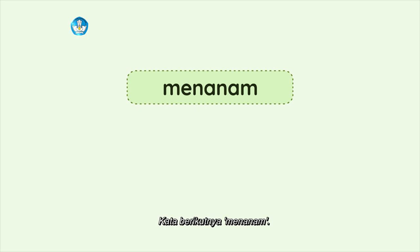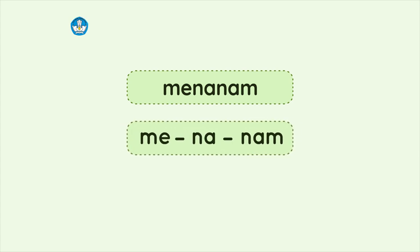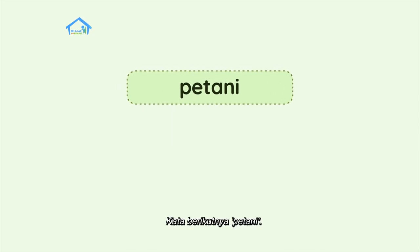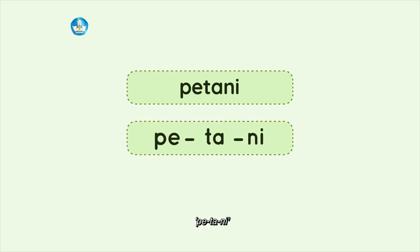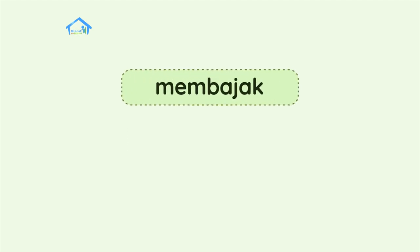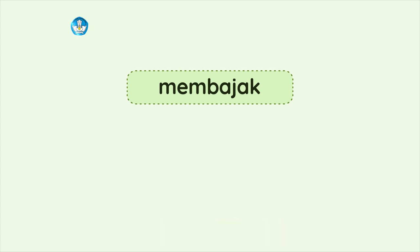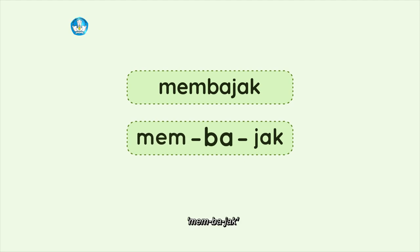Kata berikutnya, menanam. Apakah menanam mempunyai dua suku kata? Me-na-nam. Ada tiga suku kata, bukan dua. Kata berikutnya, petani. Apakah petani memiliki dua suku kata? Pe-ta-ni. Ada tiga suku kata, bukan dua. Kata berikutnya, membajak. Apakah membajak mempunyai dua suku kata? Mem-ba-jak. Ada tiga suku kata, bukan dua.